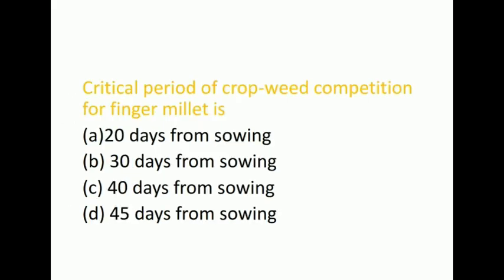Next question: Critical period of crop-weed competition for finger millet is 20 days from sowing, 30 days, 40 days, 45 days. The correct answer is 20 days from sowing.